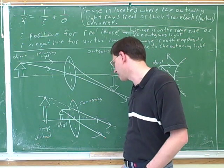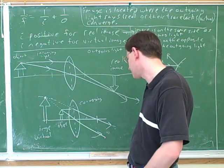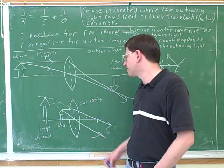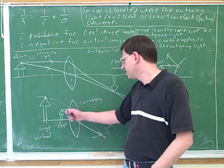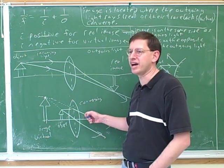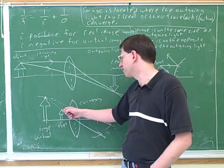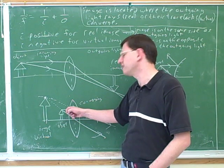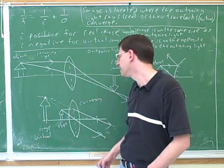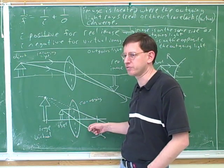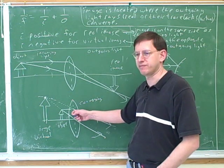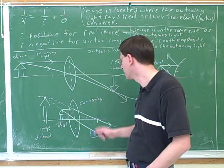Convex lenses are always converging. The reason you might have hesitated is because these light rays didn't actually end up converging with each other, but this is still considered a converging lens. Even though they're not going to converge, they're certainly converging more than they started. This ray did get bent towards the other ray — it just didn't get bent enough to make them converge. So this does have converging power, even if not enough to make the outgoing rays converge.